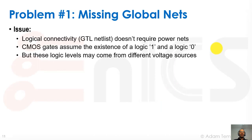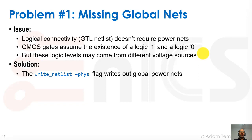The issue is like this: logical connectivity or our gate level netlist doesn't require power nets. But CMOS gates assume the existence of some sort of a logic one and a logic zero — like a VDD and ground type of a power rail that connects to these CMOS gates. But these logic levels may come from different voltage sources if we have a more complex design. So the solution is to use the minus fizz flag in the write_netlist command, or in whatever place and route tool you're using, to write out the actual voltages that connect to our global power nets to the design.